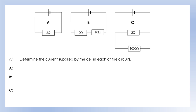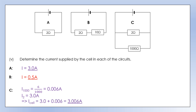Now determine the current supplied by the cell in each circuit. Circuit A: the current through the 2 ohm resistor is the same as the cell current — 3 amps. Circuit B: it's a series circuit so current is the same everywhere — 0.5 amps through the cell. Circuit C: we need the current through the 1,000 ohm resistor as well, which is 6 ÷ 1,000 = 0.006 amps. Adding that to the 3 amps through the 2 ohm gives the total cell current. So adding that resistor in parallel means the cell must provide a slightly larger current.